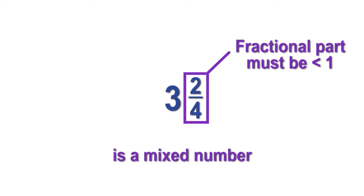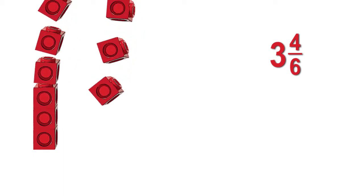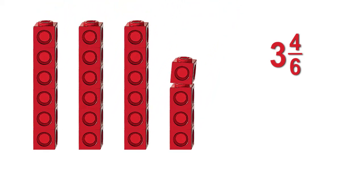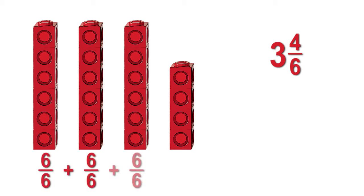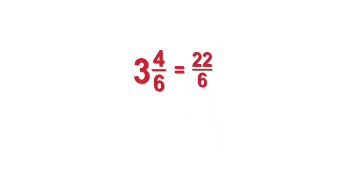Can a mixed number be changed back to fractional form? Yes. We will use linking cubes to demonstrate. If one linking cube is one sixth, then given the fraction three and four sixths, we know we need to manipulate or draw three wholes with six cubes in each. We need to show three stacks of six cubes and one stack of four cubes for the fractional amount. We can add six sixths plus six sixths plus six sixths, then add the extra four cubes to get the total of twenty-two sixths. So the mixed number three and four sixths can be rewritten in the fractional form twenty-two sixths.